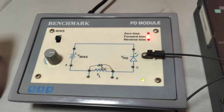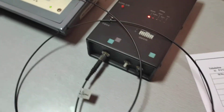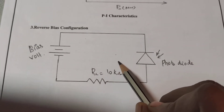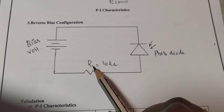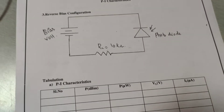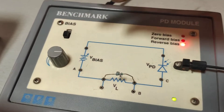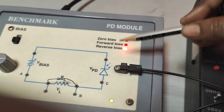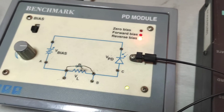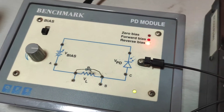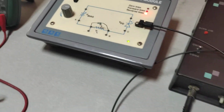The photodiode absorbs photons and converts them into electrical current. The next condition is reverse bias. In the reverse bias configuration, RL is also connected as 10 kilohm. We first keep the voltage constant and adjust the optical power. We should keep the switches in the reverse bias position — unlike the zero bias and forward bias cases — before proceeding.